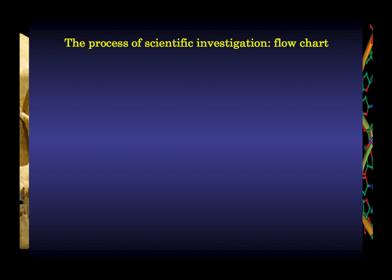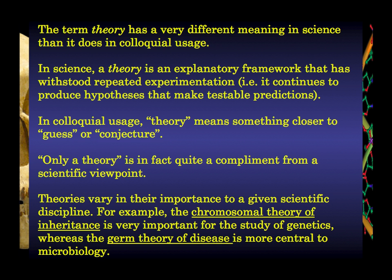Evolutionary theory is the core theory of biology — the most fundamental theory within the biological sciences. If you consider all the different theories within biology, evolutionary theory sits at the bottom as the foundation. The chromosomal theory of inheritance is technically part of the theory of evolution, as is germ theory. Evolutionary theory is the one theory in biology with the broadest explanatory power.